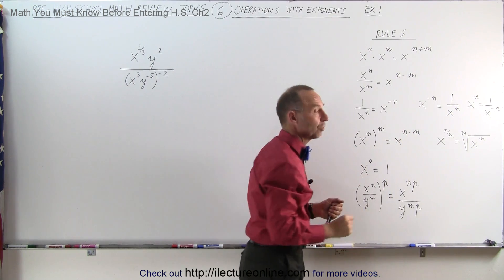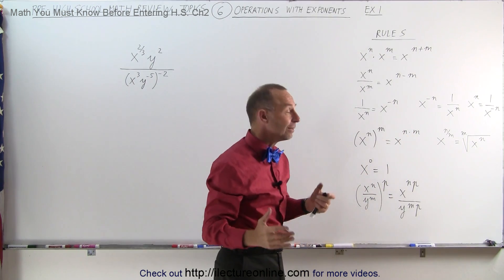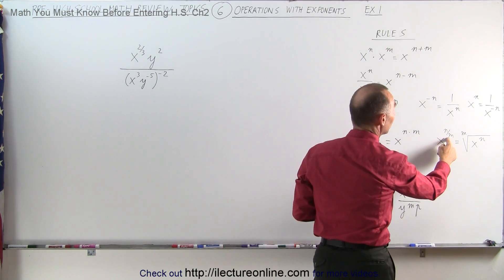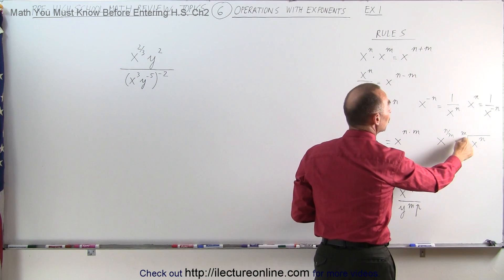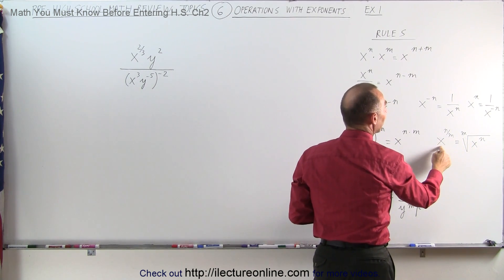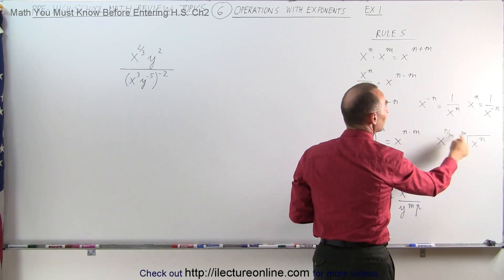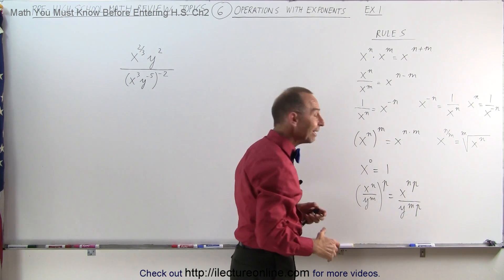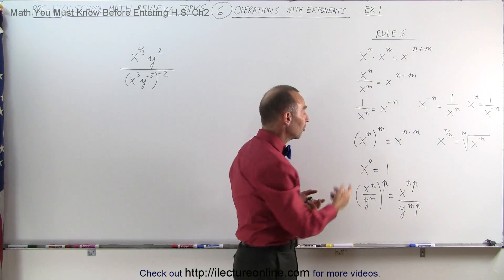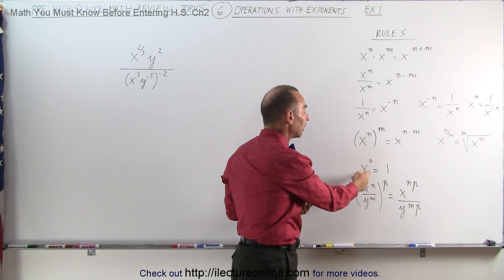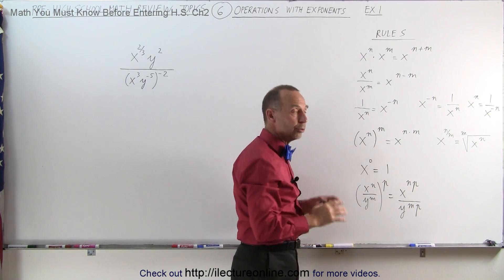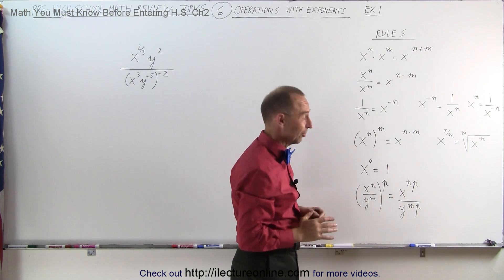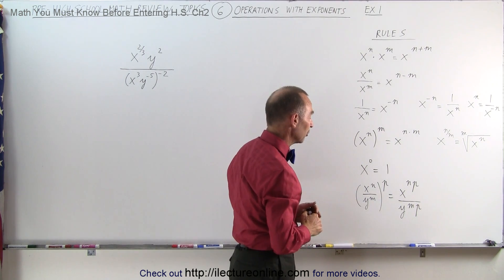When you have a power of a power, you multiply the exponents. And if you have fractional exponents, the number on the bottom is the root and the number on the top is the exponent of the number. If you raise anything to the zero power, that always gives you 1, unless what's there is equal to 0, which you don't want to do.